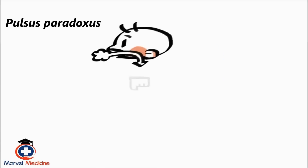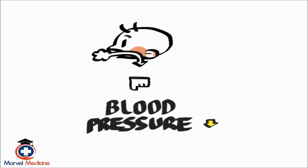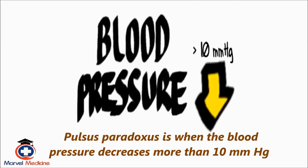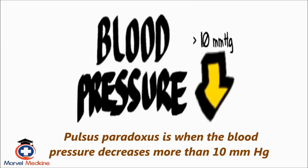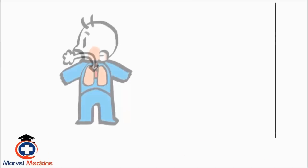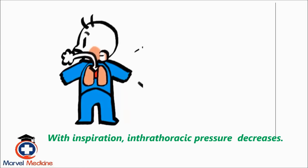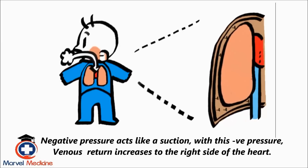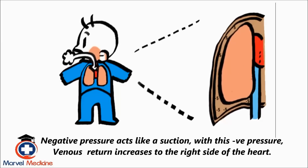The discussion of tamponade also leads to the discussion of pulsus paradoxus. What you need to know is in normal conditions with inspiration, your blood pressure will decrease, but not by much. Pulsus paradoxus is when the blood pressure decreases more than 10 mmHg. Why does this happen? Visualize the heart. Now imagine inspiration. What does that do to intrathoracic pressure? It decreases, right? Negative pressure acts like a suction or vacuum of sorts. With this negative pressure, venous return increases to the right side of the heart.